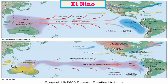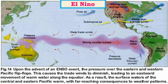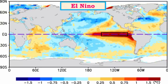In El Niño conditions, the western Pacific loses its warm water, suppressing rainfall and leading to drought in Australia, Indonesia, and surrounding regions. Meanwhile, piling up of warm water in the eastern Pacific creates upliftment, cumulonimbus cloud formation, and good rainfall there. Thermal infrared images show warm waters piled up in the central and eastern Pacific, while the western Pacific, which normally has warm waters, shows cold waters during El Niño.